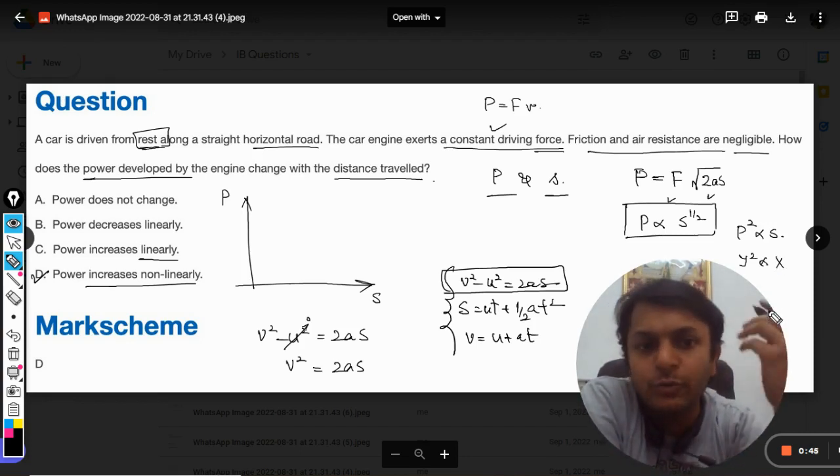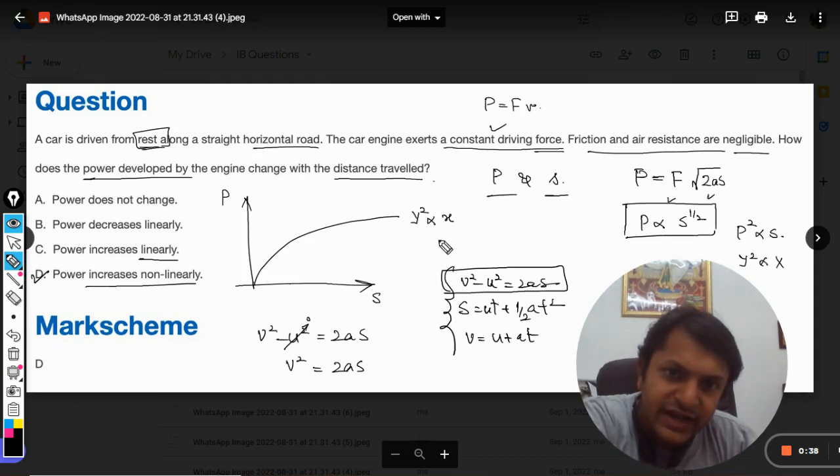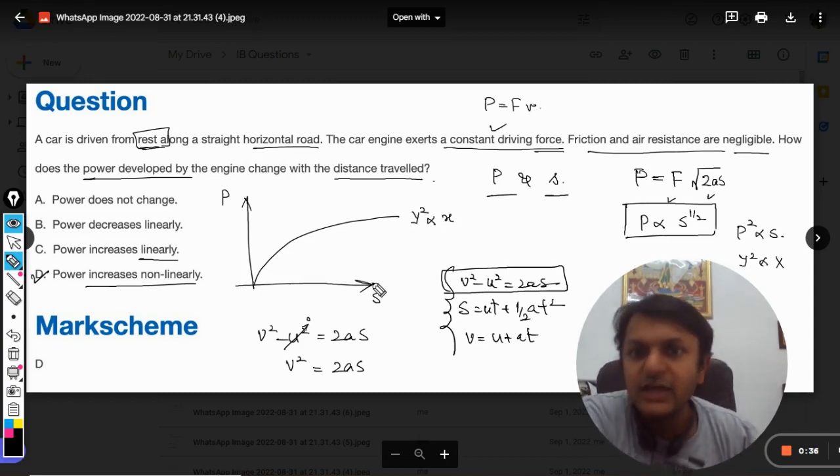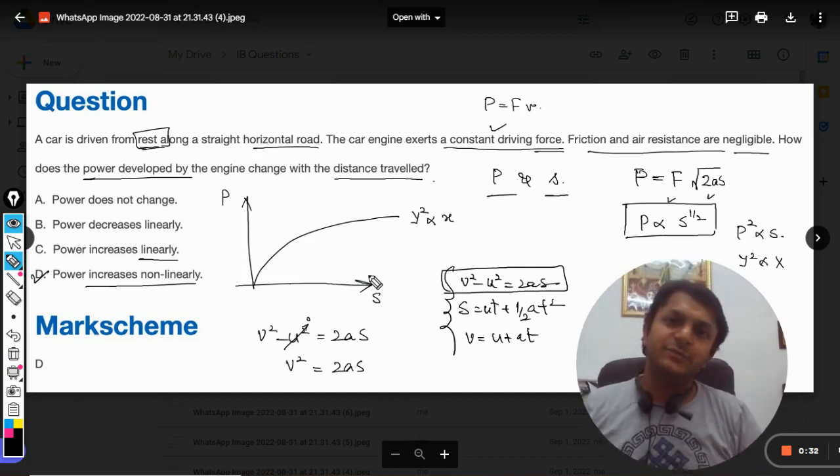It becomes y² directly proportional to x. I have discussed this graph in many other questions on YouTube. This graph will be like this, so it is a parabola in which y² is directly proportional to x.